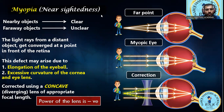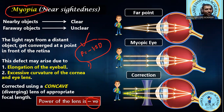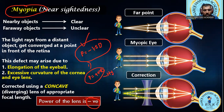Always remember: the power of the corrective lens for myopia is always negative. For example, if the power is −1.5 D, the person is suffering from myopia. For a person with hypermetropia, the power of the lens is always positive. So plus power is for hypermetropia, and minus power is for myopia. Recall that the power of a lens P = 1/f in meters, or P = 100/f in centimeters.